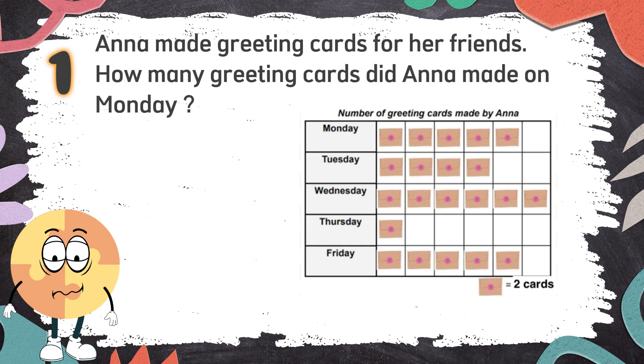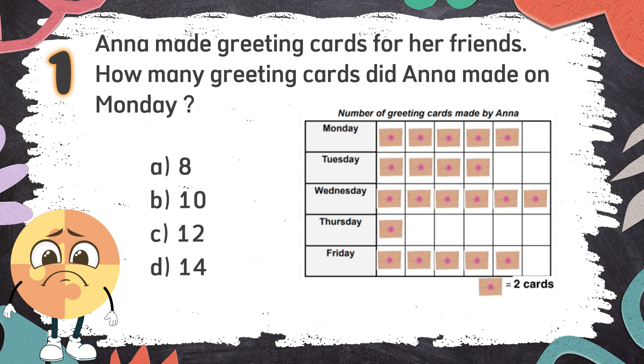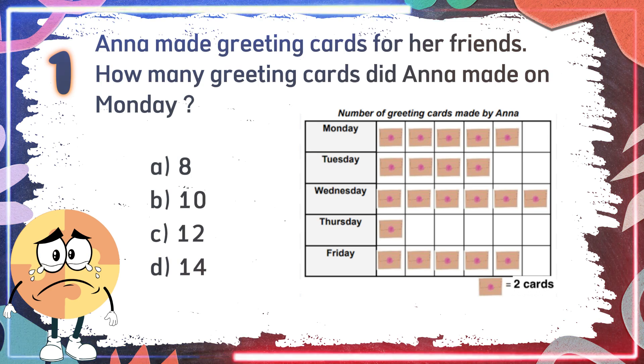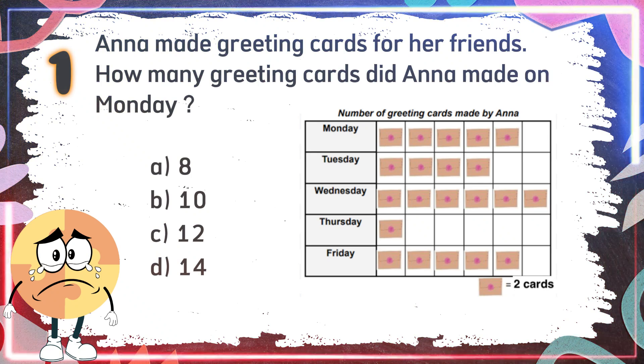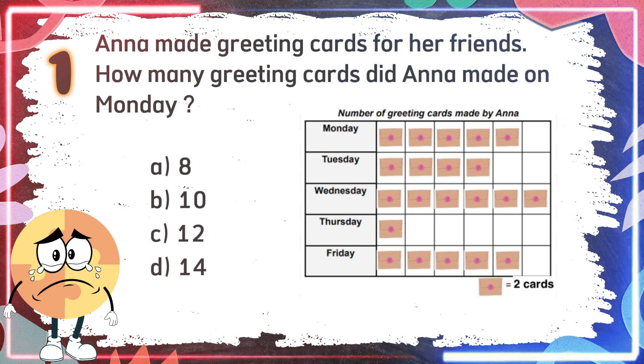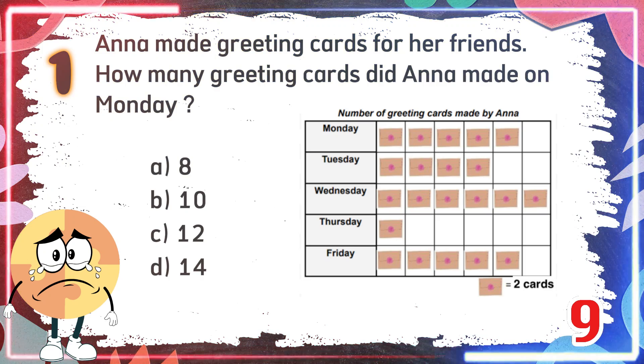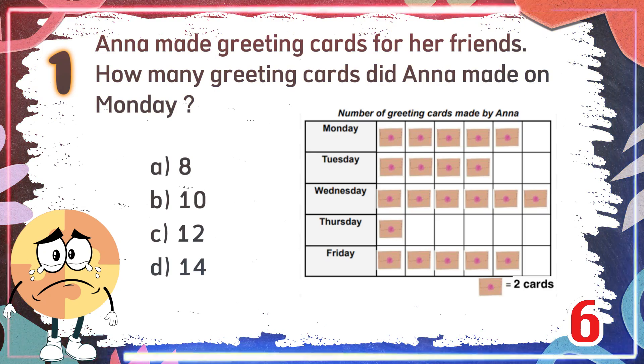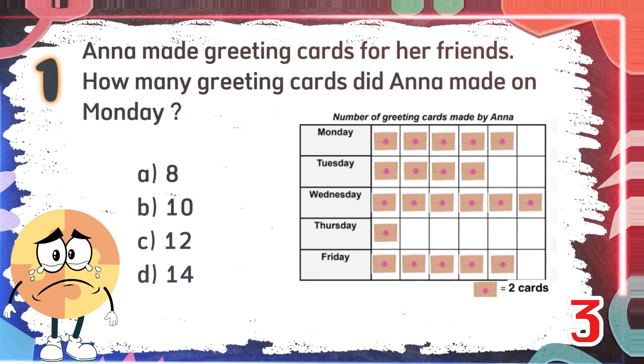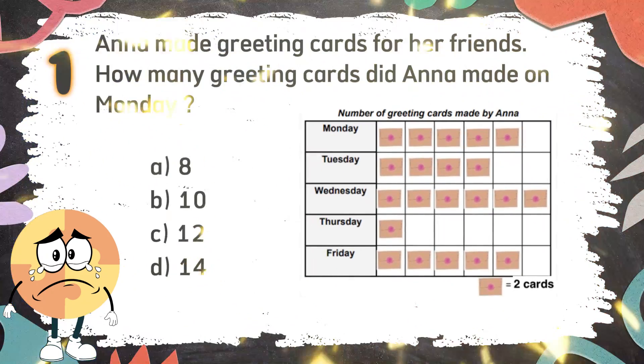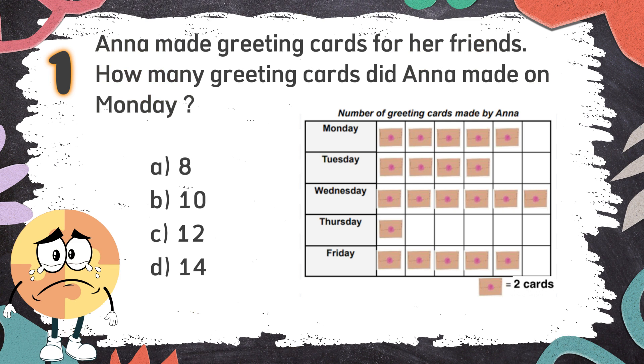Average round. Number 1: Anna made greeting cards for her friends. How many greeting cards did Anna make on Monday? The choices are A, 8, B, 10, C, 12, D, 14. The correct answer is B, 10.